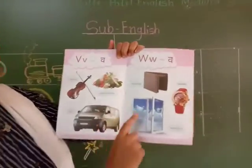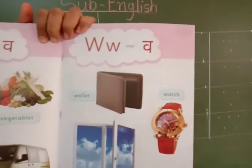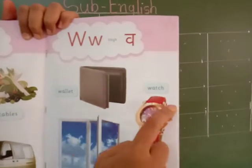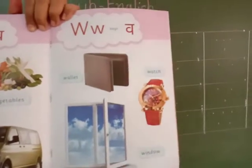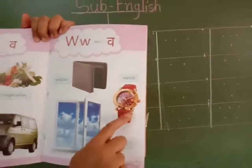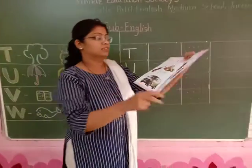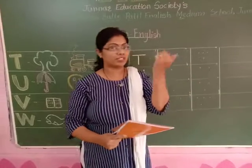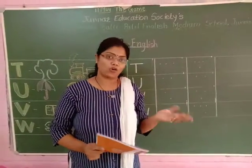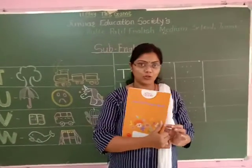After V, W is there. So W says W, W, W. W for wallet, then watch, and window. You know all these things. Watch means wrist watch, which we tie on our wrist. So these are three pictures for letter W.